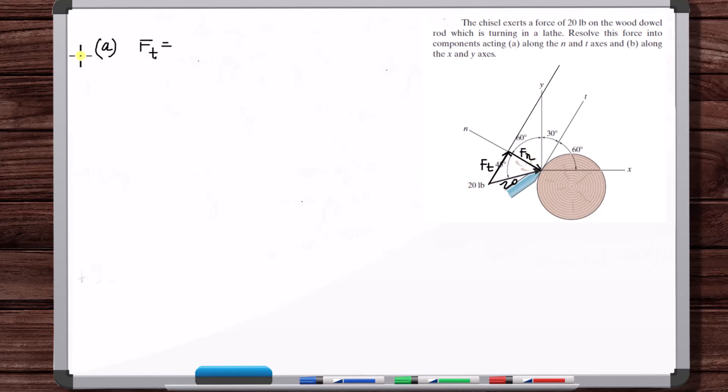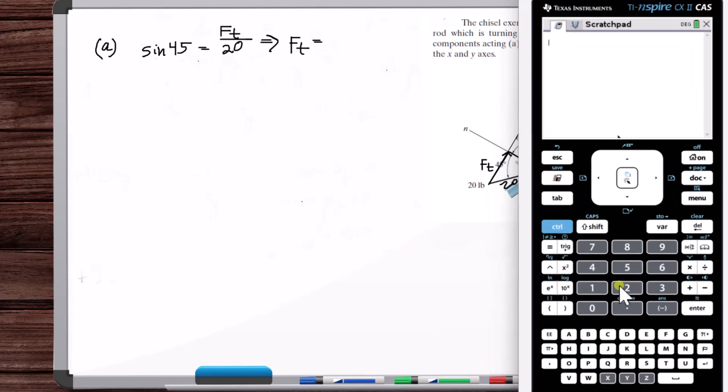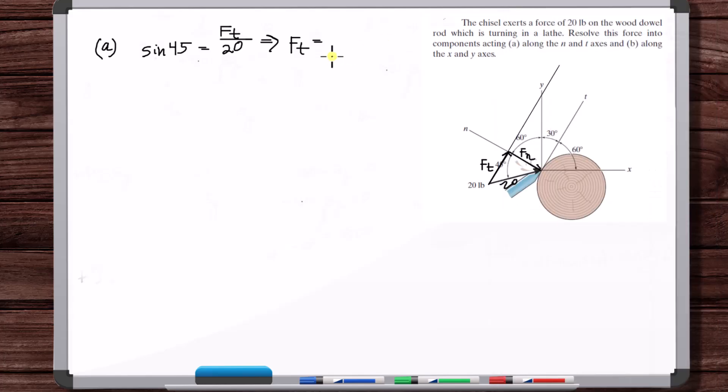Okay, F_T is, so we have this is 45, so opposite over hypotenuse. So sine of 45 is equal to F_T over 20.